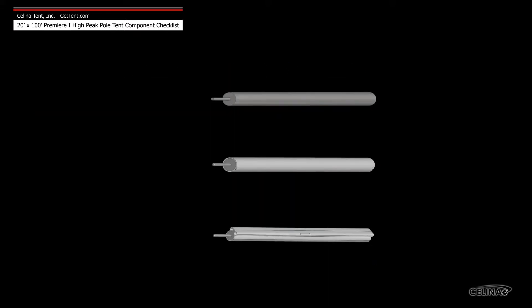Celina side poles are available in three types: galvanized steel, anodized aluminum, and anodized aluminum keder track.